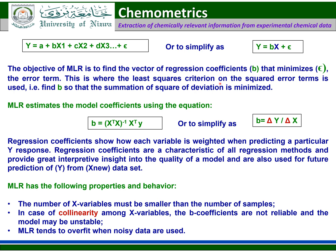The objective of MLR is to find the vector of regression coefficients that minimize the error term — this is where the least squares criterion on the squared error term is used. Find b so that the summation of squared deviations is minimized. MLR estimates the model coefficient using b = delta y / delta x. Regression coefficients show how each variable is weighted when predicting a particular y response, and are used for future prediction of y from new x data. MLR has the following properties: the number of x variables must be smaller than the number of samples; in case of collinearity among x variables, the b coefficients are not reliable and the model may be unstable; and MLR tends to overfit when noisy data are used.